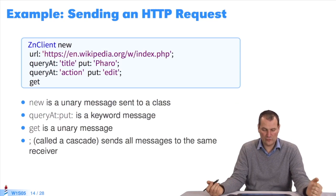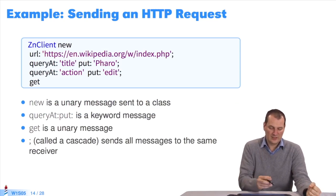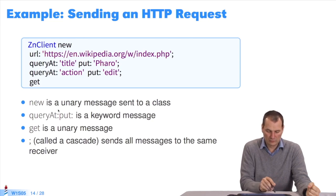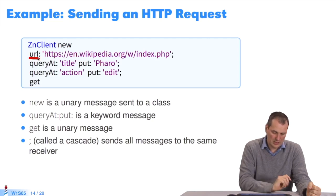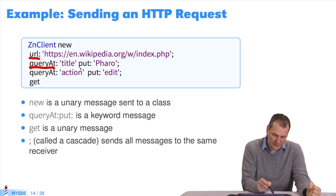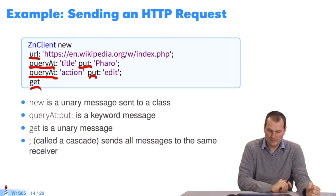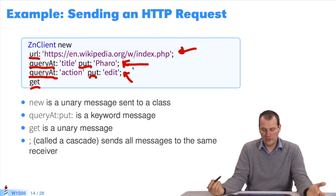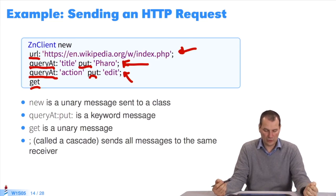As an example, imagine I'm sending an HTTP request. ZnClient is a Faro HTTP server, so I create an instance of ZnServer. New is a unary message — there's no argument, no colon. URL is a keyword message — there's a colon. Query at put is another keyword message. And get is a unary message.